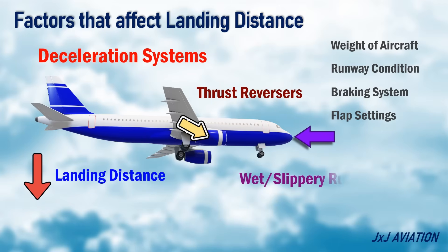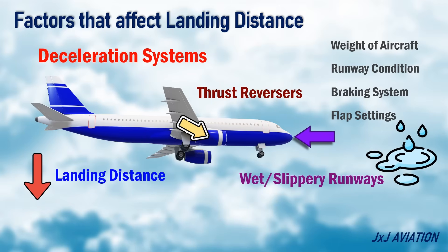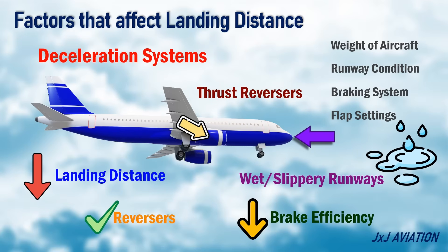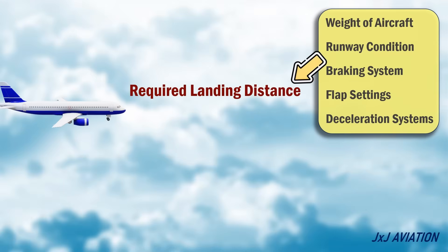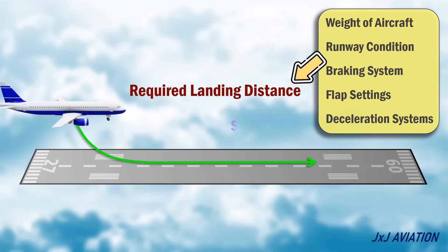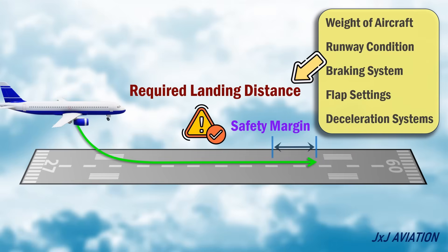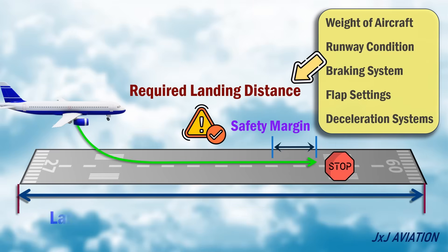The reversers are helpful on wet or slippery runways, because the brake efficiency reduces, but the reversers will be effective. Based on the actual aircraft and environmental conditions, the required landing distance is obtained. The RLD will also include a safety margin to ensure the aircraft stops on the runway. The total length of runway that is suitable for an airplane to land is called the landing distance available, or LDA.